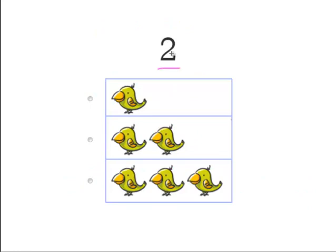How many birdies represents 2? Here we see 1 bird, here we see 1, 2 birds, and here we see 1, 2, 3 birds. 2 would match the 2 birds right here.